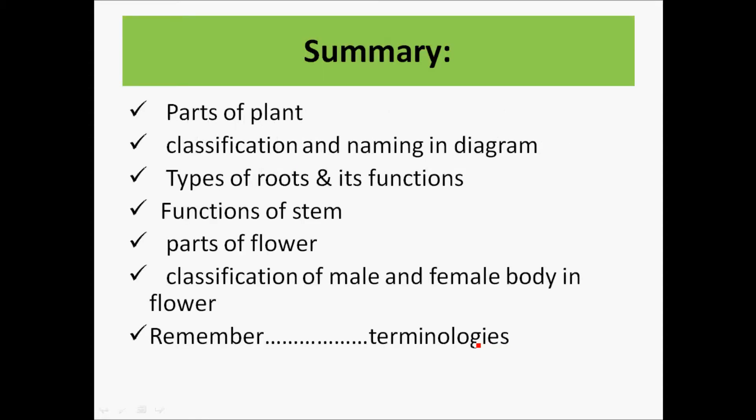Now moving on to the summary of this session. We talked about the parts of plant and classified them with the help of a diagram. We talked about roots, types of roots and its functions, functions of stem, the vascular system and the transpiration process. We talked about the parts of the flower and the classification of male and female body in a flower and how the fertilization process works. The main agenda of this session is to remember the terminologies which will help you in the next coming slides.